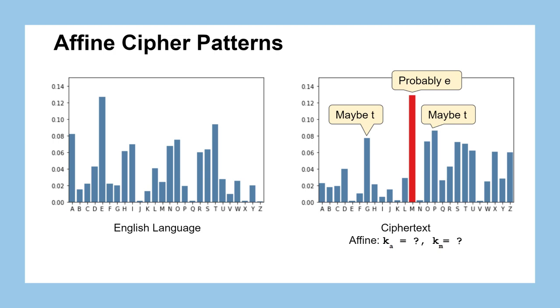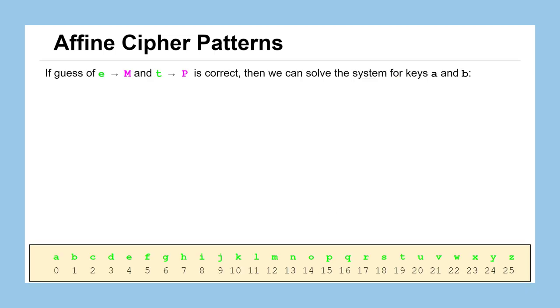And assuming that those things are right, we can set up the following system of equations to solve for the two keys, which we'll call A and B here just to simplify the work. So if our guesses are correct, we can set up these two equations. If the plaintext letter E, which has a numerical value of 4, gets mapped to the ciphertext letter M, which has a numerical value of 12, we can set up that second equation in our system. That 4 times the numerical key A plus the additive key B is congruent to 12 mod 26. And if our second guess is correct, that T, which is a numerical value of 19, is mapped to the ciphertext letter P, which is a numerical value of 15, we can set up that first equation. That 19A plus B is congruent to 15 mod 26.